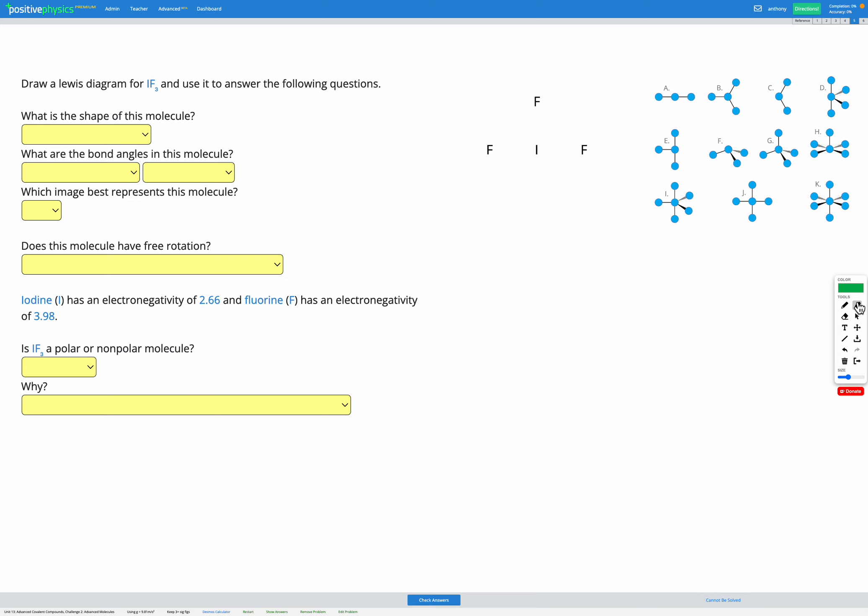This skill puts together everything we've learned about covalent bonds and applies it to advanced molecules that may include reduced or expanded octets. In this question we have IF3, so we're going to go ahead and draw our Lewis diagram for this molecule.